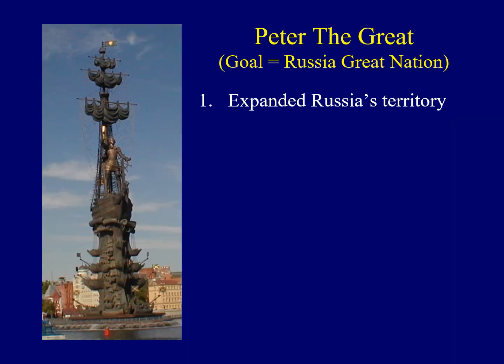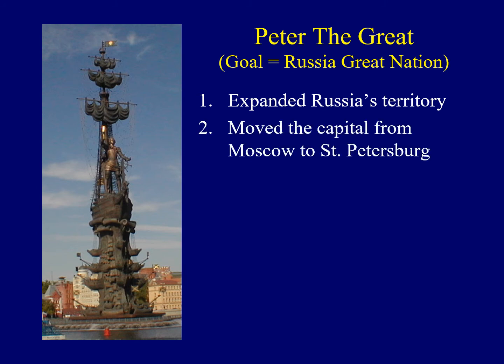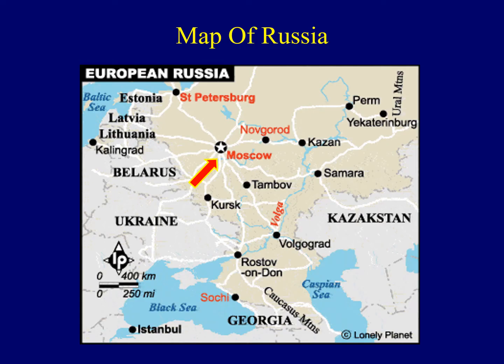Another example of Peter's attempt to make Russia a great nation involved the capital. He moved the capital from the traditional city of Moscow to a brand new city, St. Petersburg. Here we see a map of Russia with the arrow pointing to Moscow. What Peter wanted to do was create a brand new, modern capital — this way he could impress visitors just as Louis XIV could do at Versailles. St. Petersburg, which is on the Baltic, was created as the new capital of Russia.